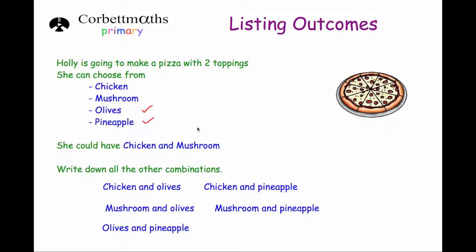So those are all the combinations we could have. We worked our way down through: chicken and mushroom, chicken and olives, chicken and pineapple, mushroom and olives, mushroom and pineapple, and then olives and pineapple. It's just working through in a logical way, and if you work in a logical way you'll get all the possible combinations.